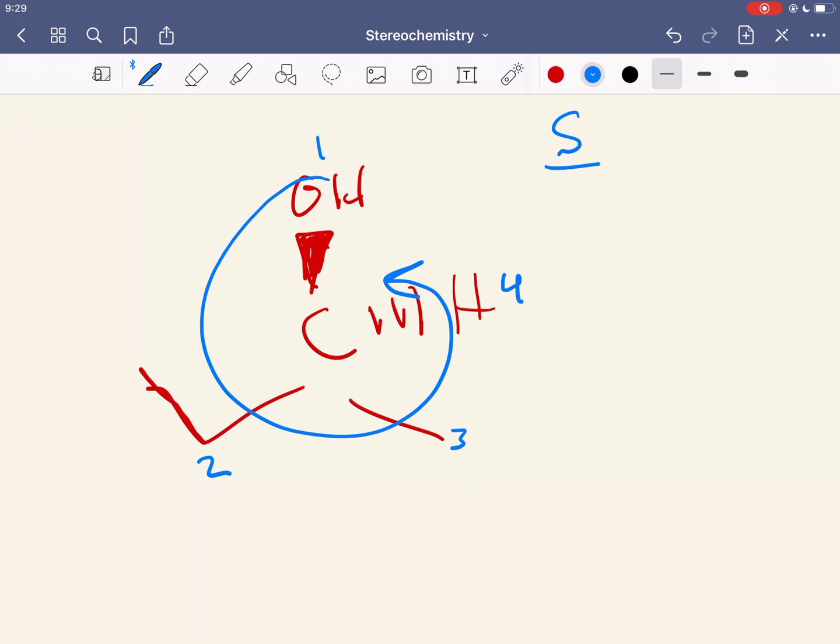But if it's not, for the most part, what you can do is just use a trick where you still assign priority, and then go in the direction 1 to 3, and see whether it's clockwise or counterclockwise. But if the lowest priority is not in the back, then for example, if you got S, it's usually the opposite. You got S, but since the lowest priority is not in the back, if you were to flip it and have that in the back, it would be R.